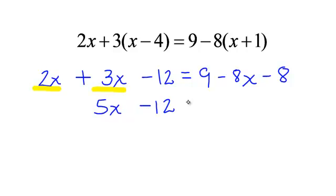On the right side, is there anything we can simplify? That we can combine? Oh yes, there is. Positive 9 and a negative 8. A positive 9 and a negative 8 will be 1 and I will bring down my minus 8x.